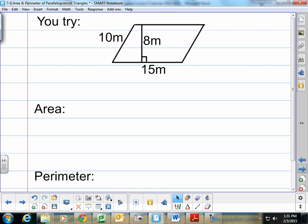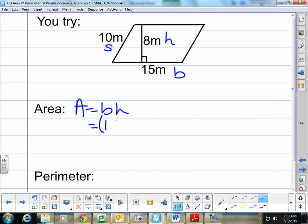How about you give this one a try? You could pause and come back to see the answers. One option is to label: this is the base, this is the height, and this is a side length. For the area, area equals base times height. The base is 15, the height is 8. So 15 times 8—you could do 10 times 8, which is 80, plus 8 times 5, which is 40. Add those together for 120 square meters.